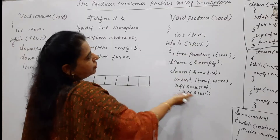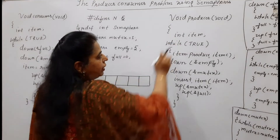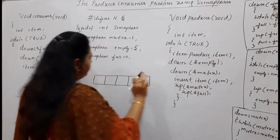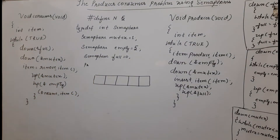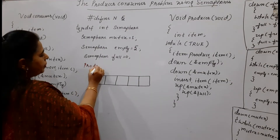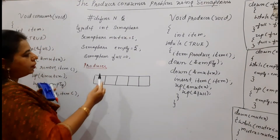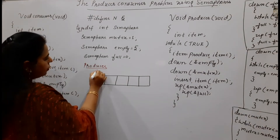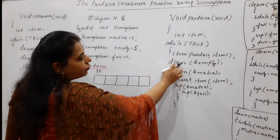Looking at the producer code: int item — whatever item is placed in the buffer is of integer type. As long as true, these instructions execute. Item equals produce item — suppose you produce the integer 35. It has been produced but not yet placed in the slot. Now the producer will perform the down operation on empty. Empty is initially equal to 5.